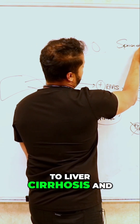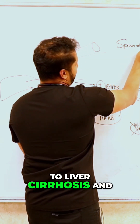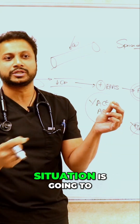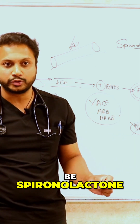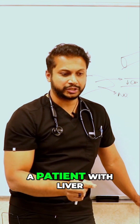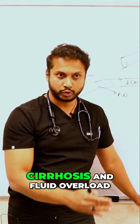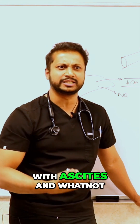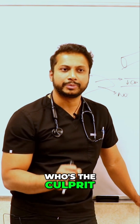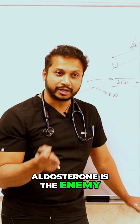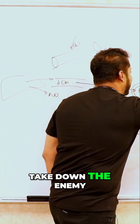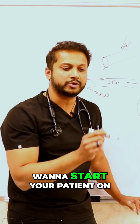When it comes to liver cirrhosis and the patient is fluid overloaded, your Lasix in this situation is going to be spironolactone. The other important thing: when you want to treat a patient with liver cirrhosis and fluid overload with ascites, who's the culprit — who's our enemy? Aldosterone is the enemy, because it's reabsorbing sodium and water. So if you want to take down the enemy, what drug do you want to start your patient on?